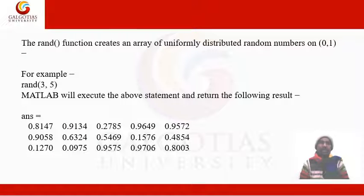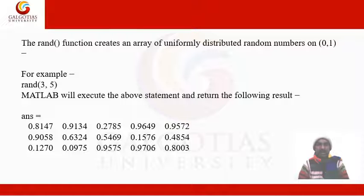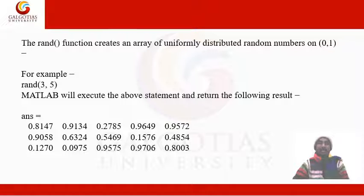The rand() function creates an array of uniformly distributed random numbers between 0 and 1. For example, rand(3,5) produces a result with three rows and five columns, with random values between zero and one.